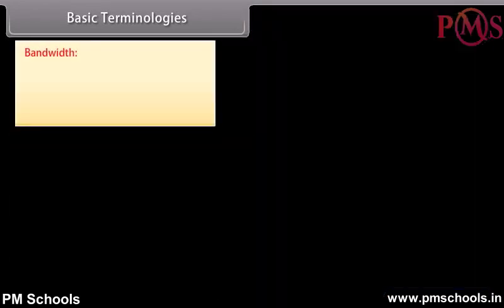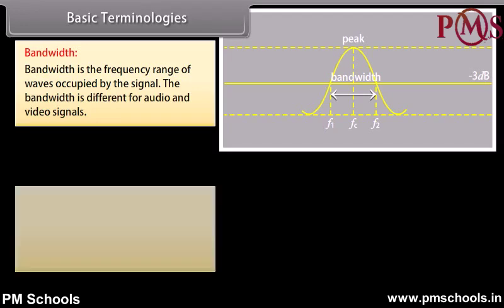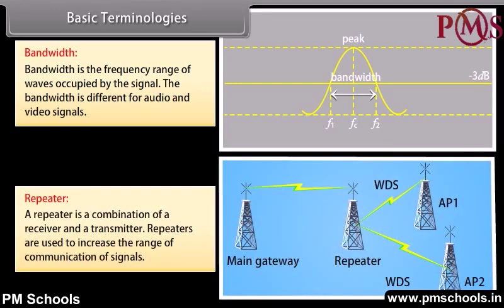Bandwidth: Bandwidth is the frequency range of waves occupied by the signal. The bandwidth is different for audio and video signals. A repeater is a combination of a receiver and a transmitter. Repeaters are used to increase the range of communication of signals.